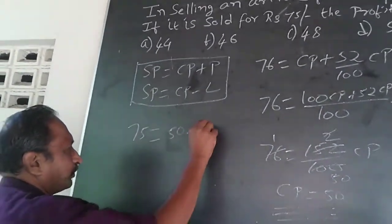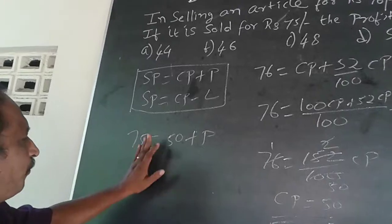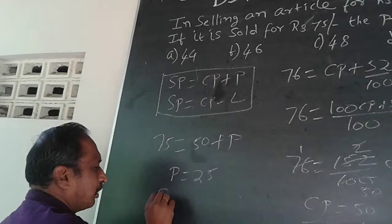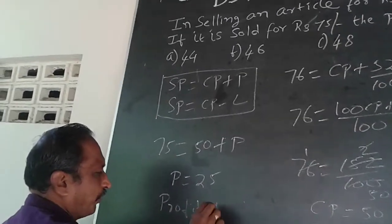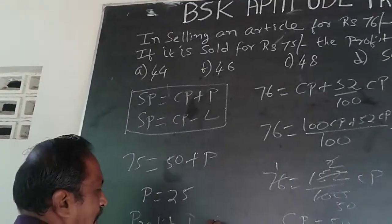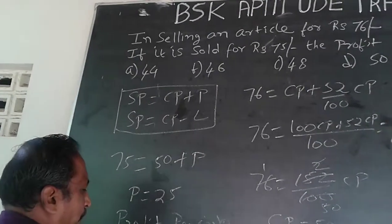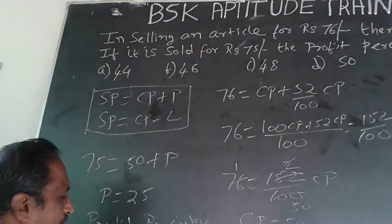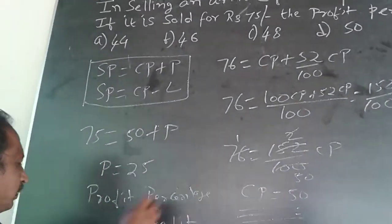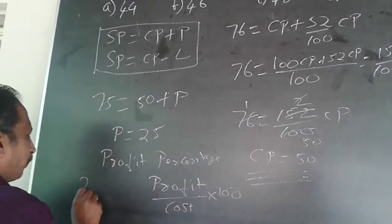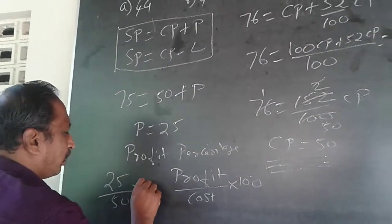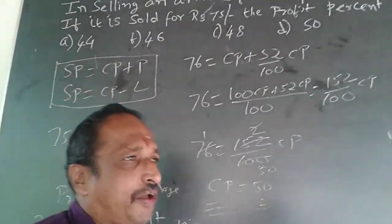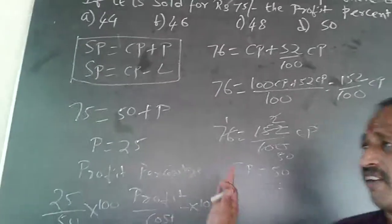Working it out: profit will be equal to 25. So the profit percentage equals profit divided by cost price into 100, which is 25/50 × 100, giving 50% profit. The answer is 50% profit. That is the full working method.